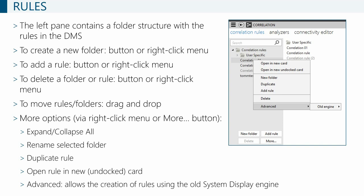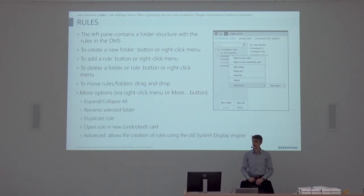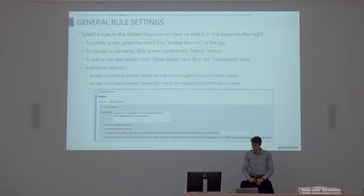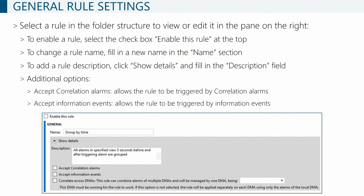A small side note: in the system display you may see other correlation rules — that's the old engine kept for backwards compatibility. We don't really need to worry about that. Now if we've added a folder or correlation rule, let's look at the general section on top of your correlation rule.